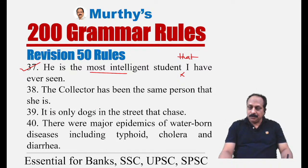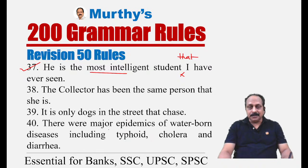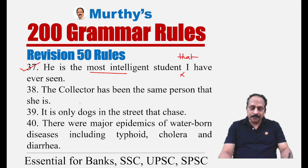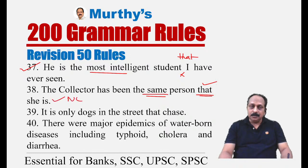Sentence thirty-eight: 'The collector has been the same person that she is.' The word 'same' requires the relative pronoun 'that' — which is already present. The sentence is correct — no error. Note: 'administrator' is masculine gender; 'administratrix' is feminine gender, though modern English uses 'administrator' for both.